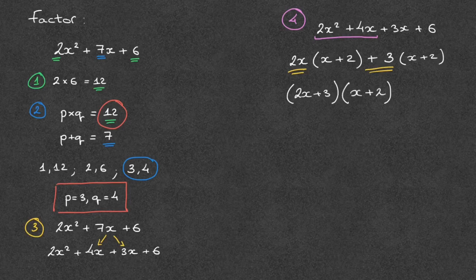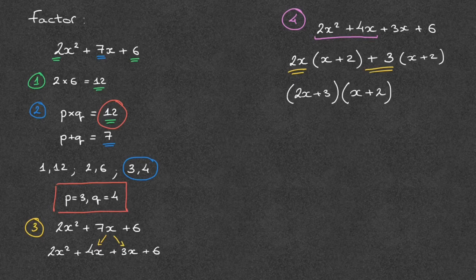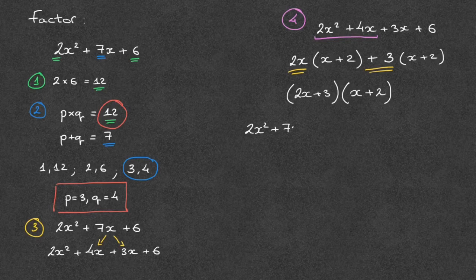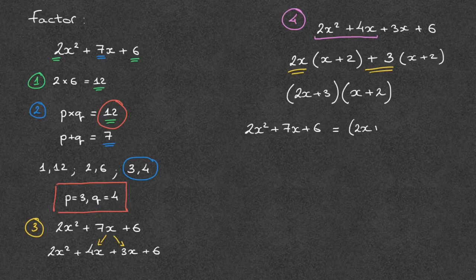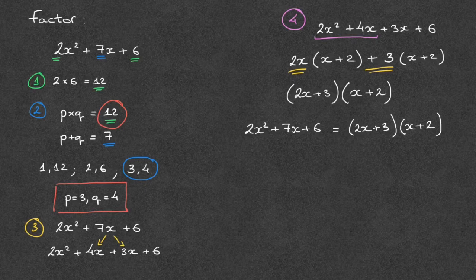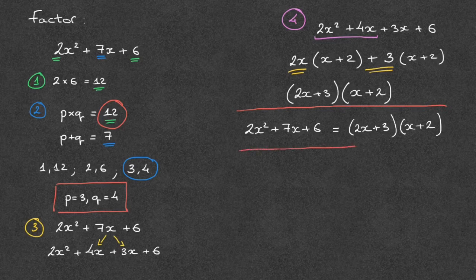And we're done. We've just factored this quadratic. And in fact, we can go ahead and state our final answer, which is that 2x squared plus 7x plus 6 in factored form is equal to 2x plus 3 times x plus 2. And that's our final answer. And we now know how to write a quadratic in its factored form by splitting the middle term.